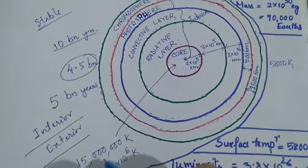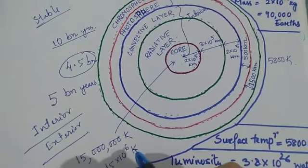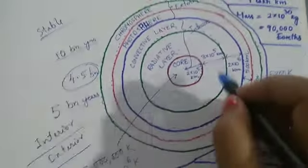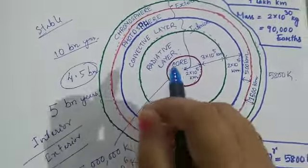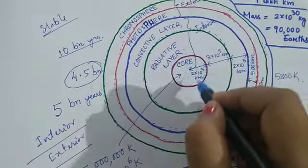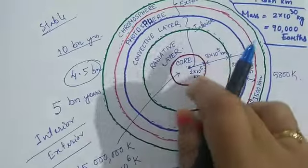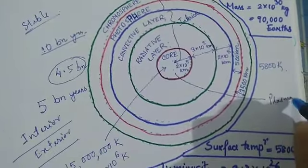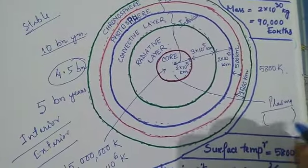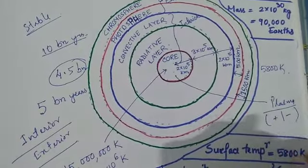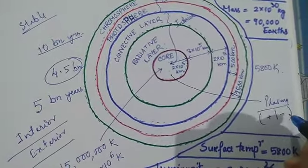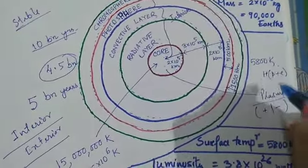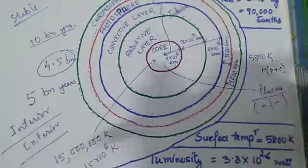And here the temperature is going up to around 15 into 10 to the power 6 Kelvin, which is very good for initiating nuclear fusion reaction. Hydrogen means one proton and one electron. Now the temperature will be so high that all the matter here will be in the plasma form.